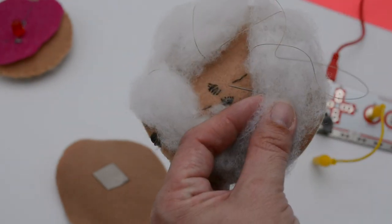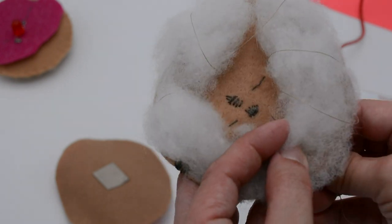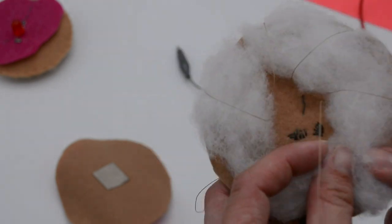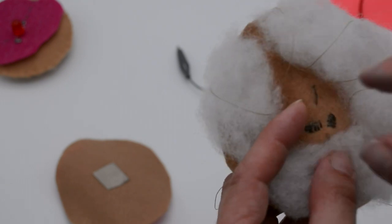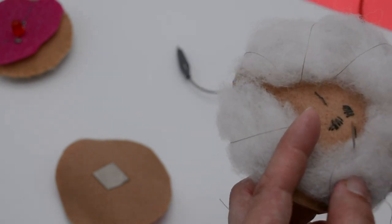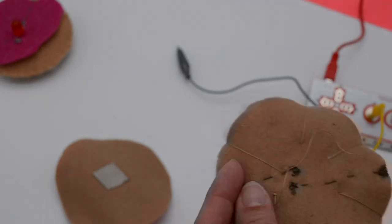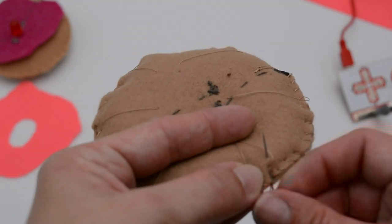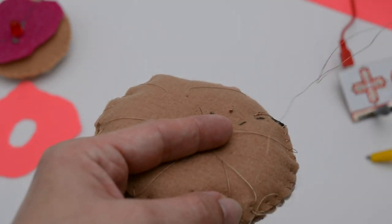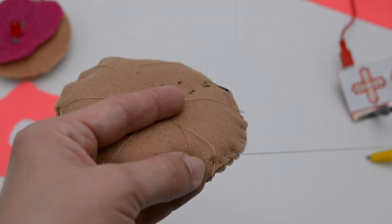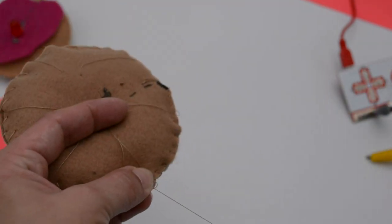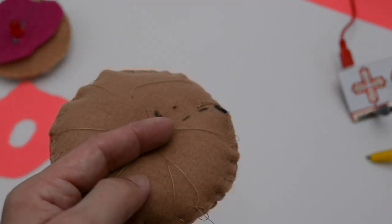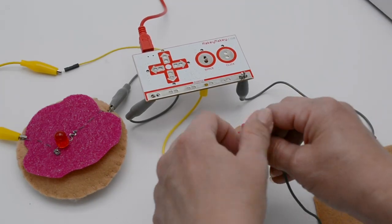So we're going to take some thread and this is almost like trapunto, which is when you're sewing stuffing in a felt design. So we're going to do a little bit of that by holding it together, and it's kind of just going to give our donut some shape on the bottom. Now we're ready to take the top of the donut and just do a nice little stitch to sew our two donut pieces together. And we are going to have a conductive donut, ladies and gentlemen.